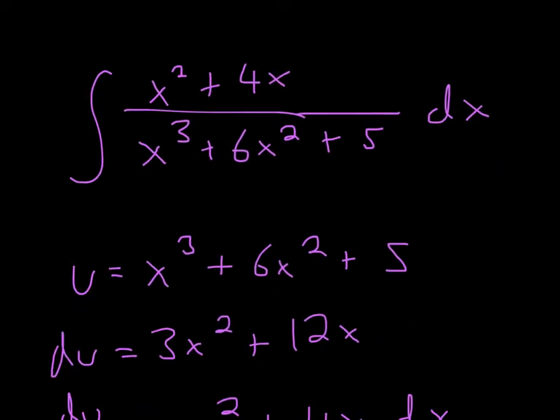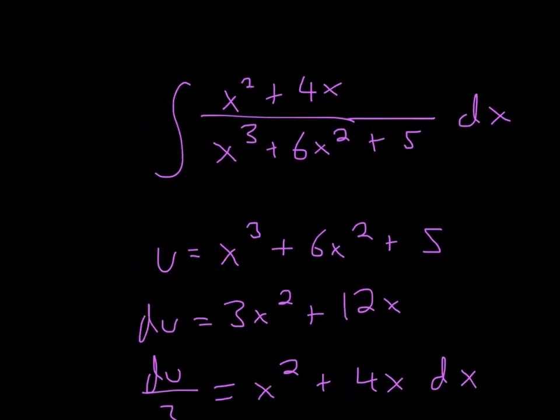Now du, which is the derivative, is just 3x squared, because I bring down the 3. 3 minus 1 is 2, and then over here, 6x squared, bring down the 2, that makes 12x, and then the 5 disappears. So now we have 3x squared plus 12x.